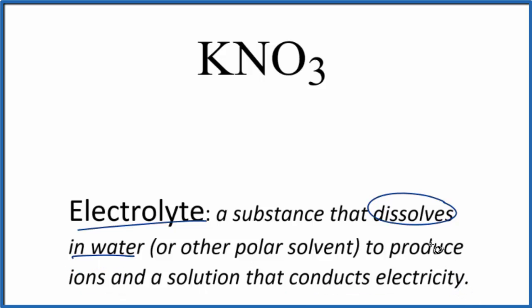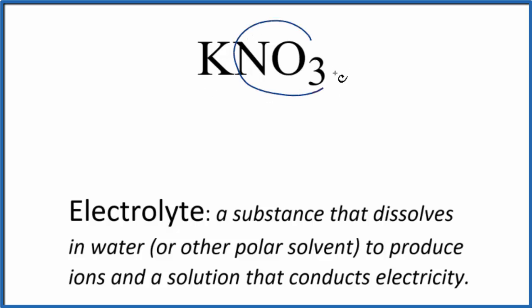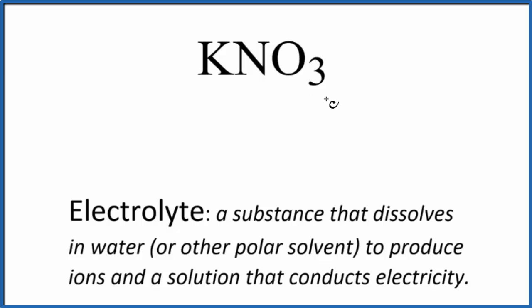For potassium nitrate, we know that potassium is a metal and the nitrate ion is a group of non-metals. So we have an ionic compound — we have ions.